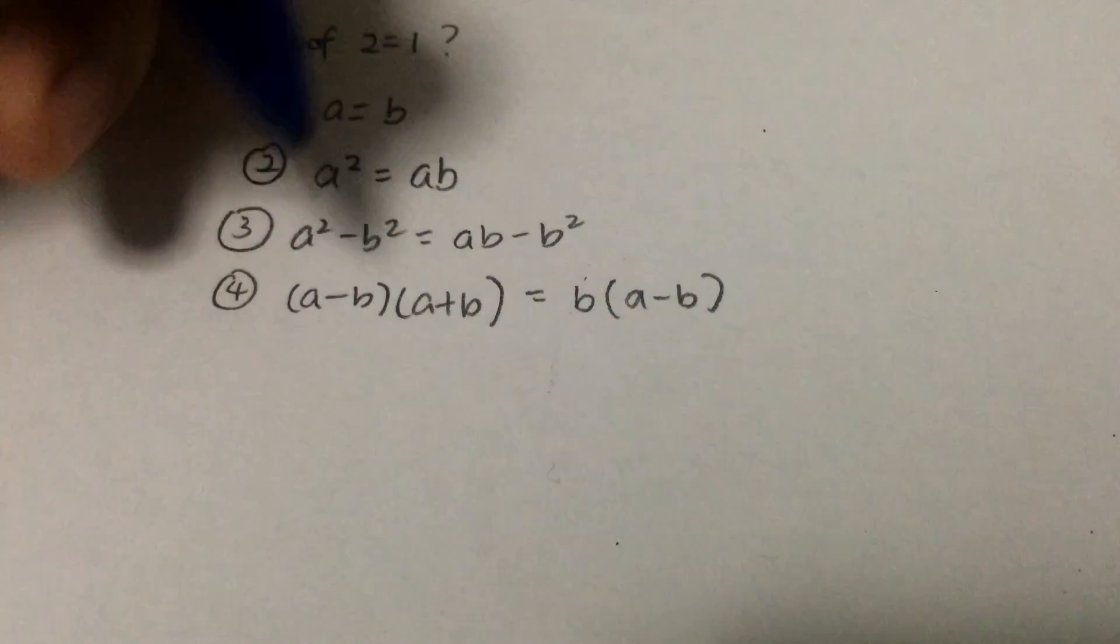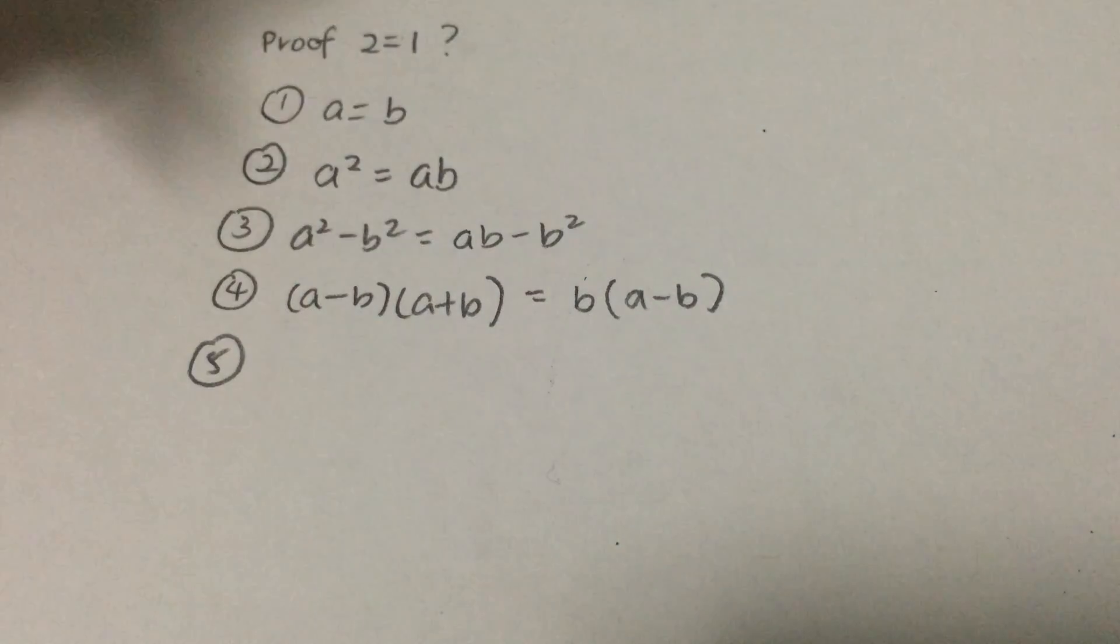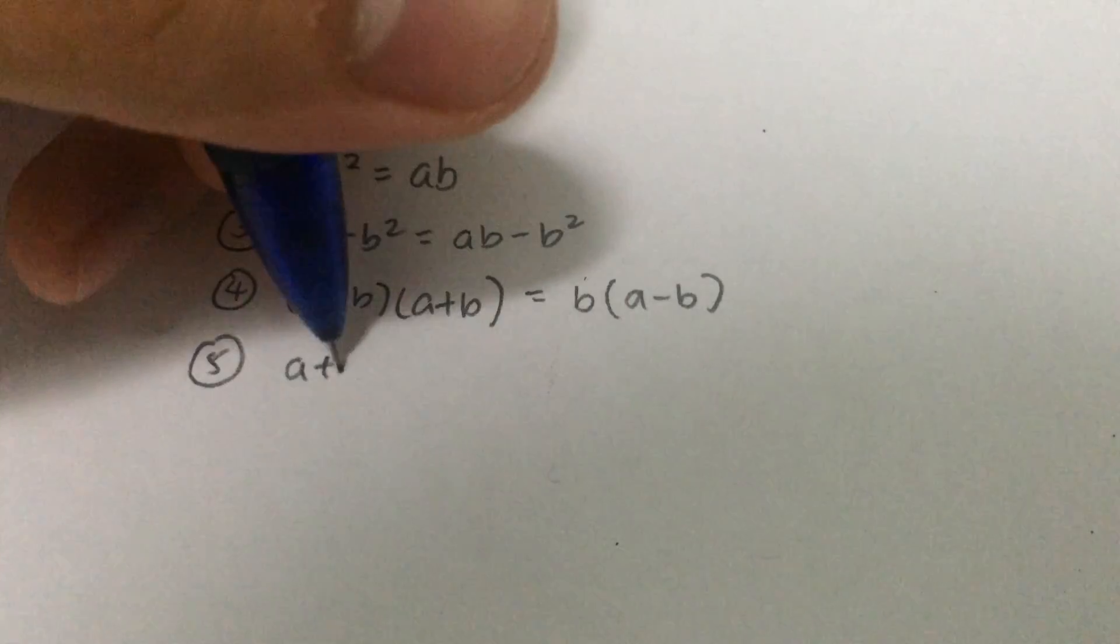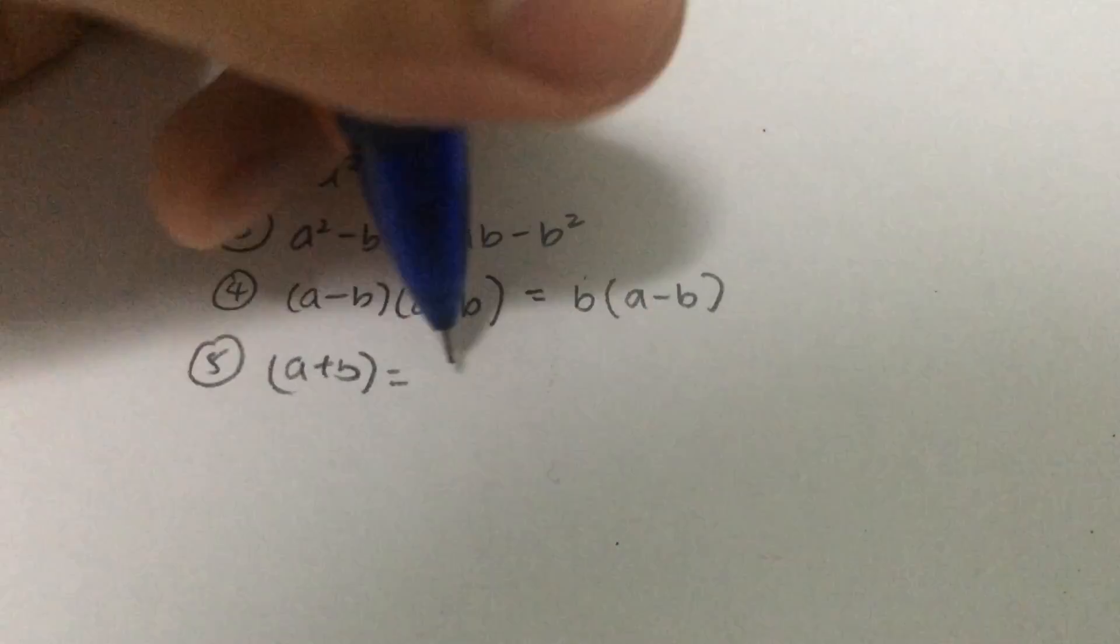And after which, the fifth step is dividing both sides out by a minus b. So it's a plus b is equals to b.